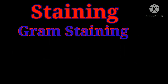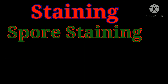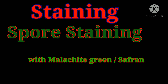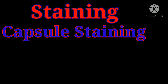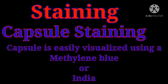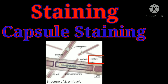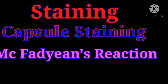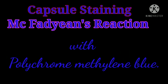Staining: Bacillus anthracis is Gram-positive. Spore staining: the spores can be stained with malachite green, safranin staining, or with Ziehl-Neelsen staining. Capsule staining: the Bacillus anthracis capsule is easily visualized using methylene blue or Indian ink stain. The capsular material can also be detected by the McFadyean reaction, which involves staining with polychrome methylene blue for a few seconds and examined under the microscope.